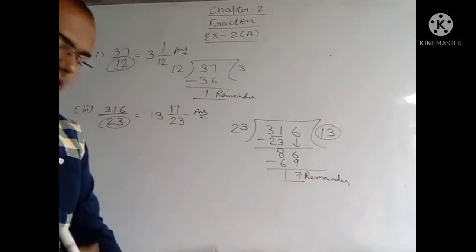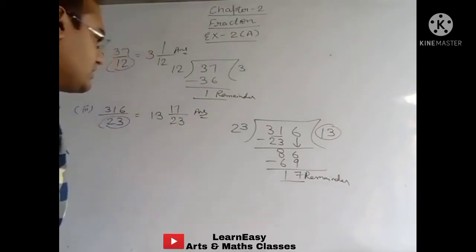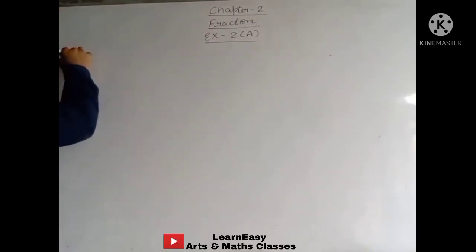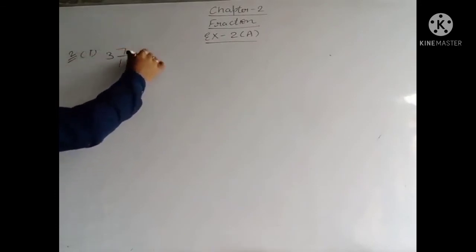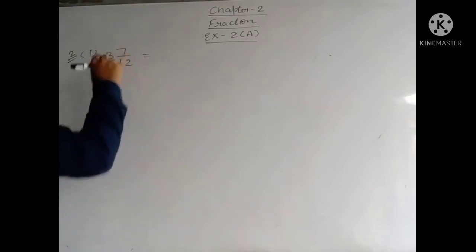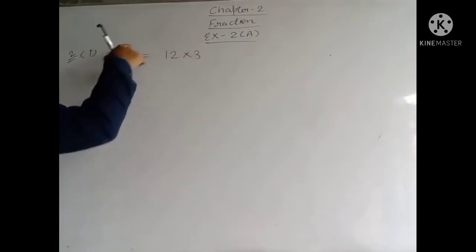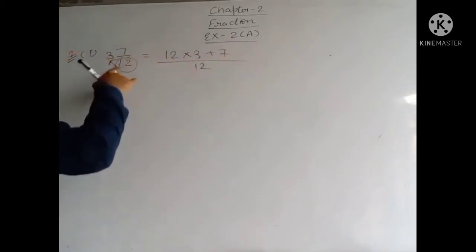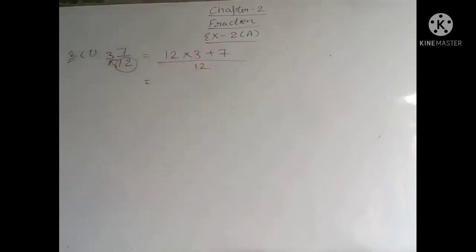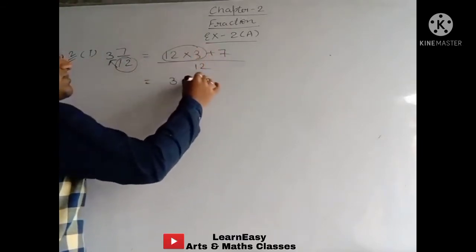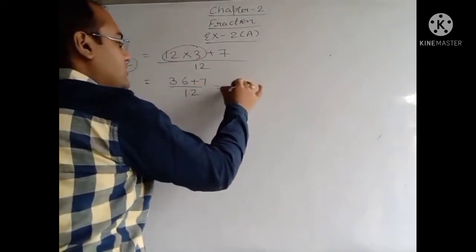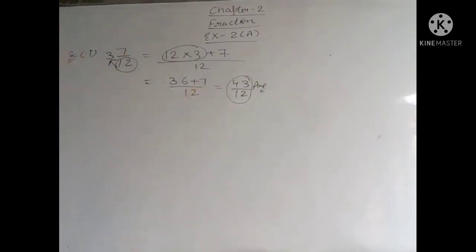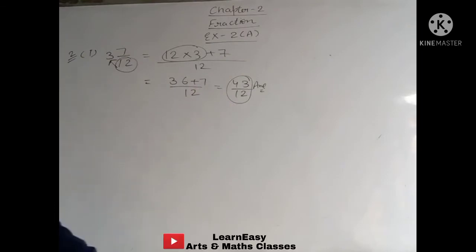Question number 2: Express the following as Improper Fractions. First part: 3 whole 7 upon 12. To convert, multiply the denominator 12 by the whole number 3, then add the numerator 7. Keep the denominator the same. So: 12 times 3 plus 7, divided by 12. That gives 36 plus 7 upon 12, which equals 43 upon 12. This is an improper fraction because the numerator 43 is greater than the denominator 12.